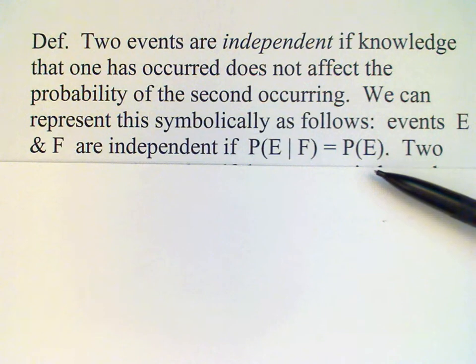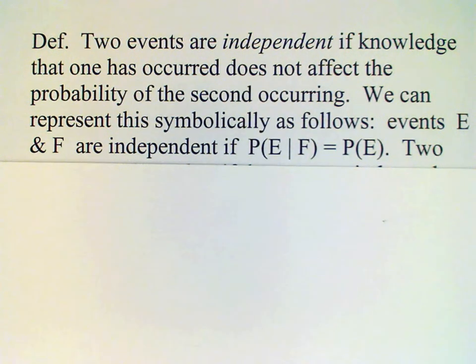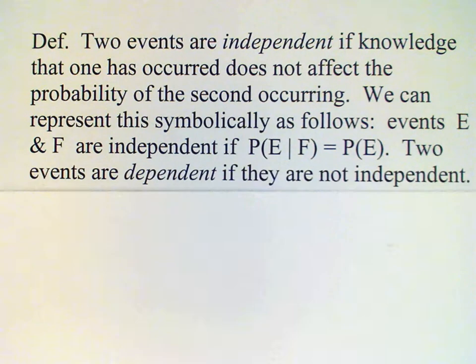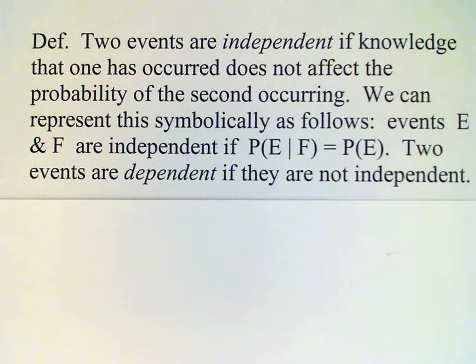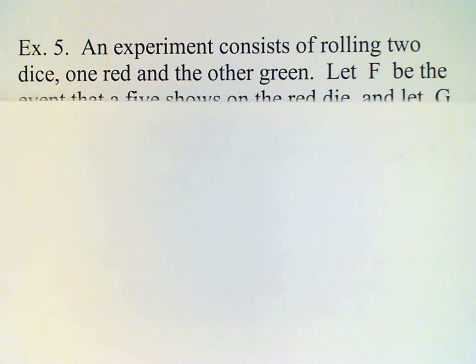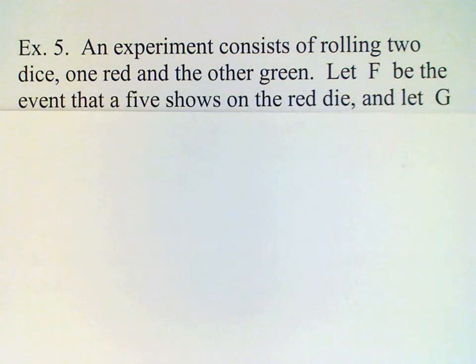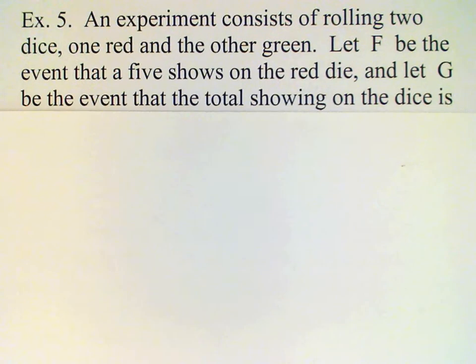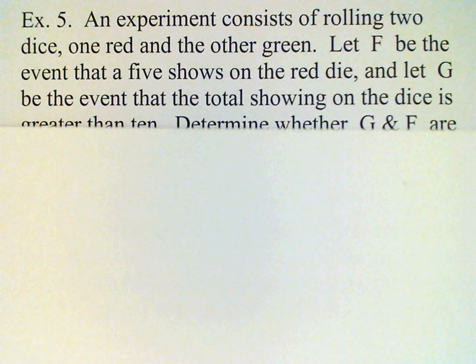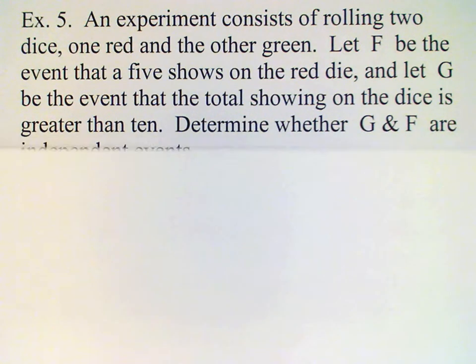in other words the same probability but without the conditioning event, then by definition these events are independent. We say events are dependent if they are not independent. For example, consider an experiment of rolling two dice — one red and one green. Let F be the event that a five shows on the red die, and G be the event that the total on the two dice is greater than ten. We want to determine whether these events are independent.